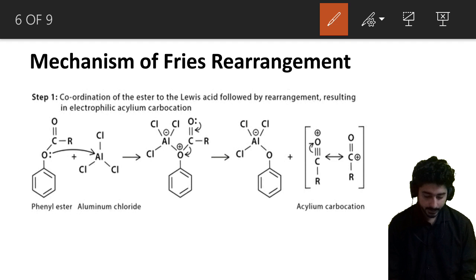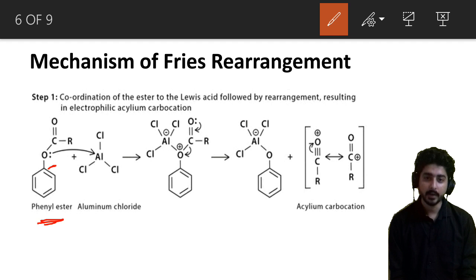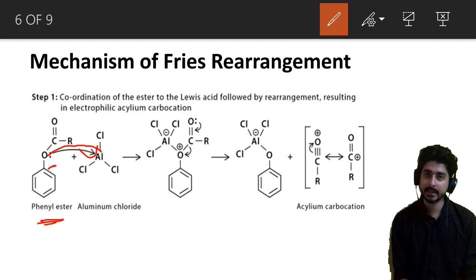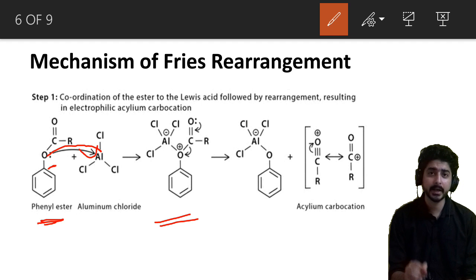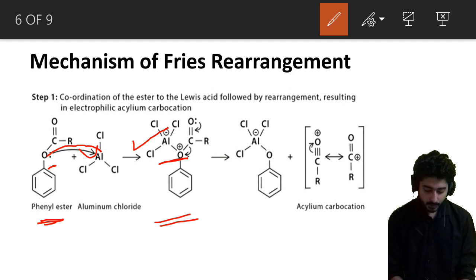Starting the mechanism: the oxygen of the benzene ring in the phenyl ester has a lone pair of electrons. This lone pair attacks the aluminium of AlCl3, forming a bond. Aluminium normally forms 3 bonds, but here forms 4, so aluminium gets a negative charge. The oxygen, now forming 3 bonds instead of 2, gets a positive charge.